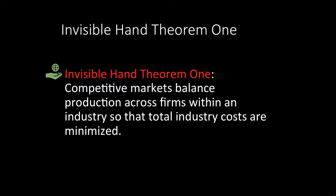So let's begin with the invisible hand theorem. This theorem says that in a competitive market, production is allocated across firms in that market — across firms in that industry — in just that way that minimizes the total industry cost of production. This is a beautiful theorem. Let me explain why this theorem is important.